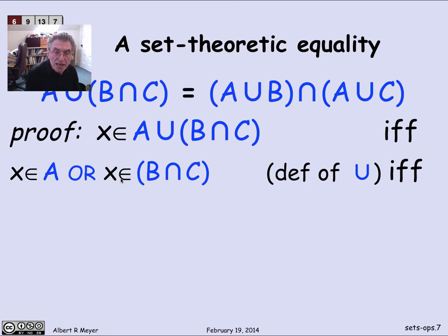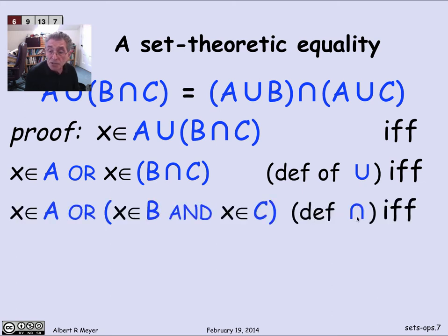Now let's look at this expression, x is in B intersection C. That's the same as x is in B and x is in C. Again, just using the definition of intersection. And now I have a propositional formula involving or and and and the basic assertions about sets of x is a member of one of those A, Bs, and Cs.